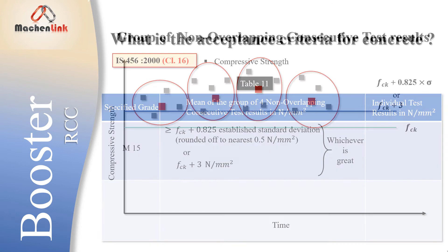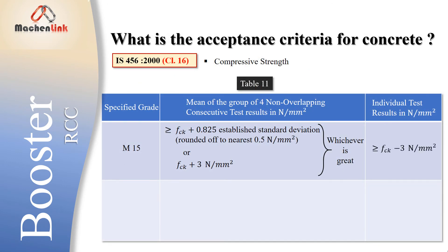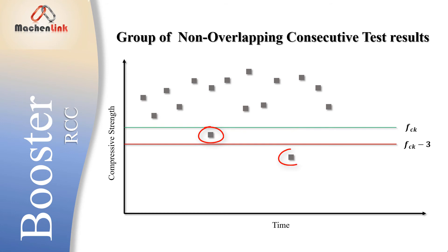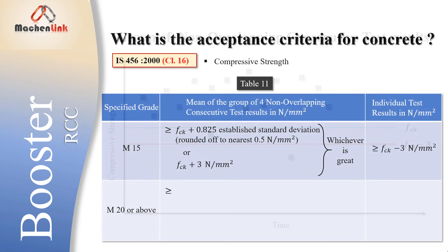The second criterion states that individual test results should be greater than or equal to FCK minus 3 N/mm². For example, if two results fall below that threshold, the one at or above FCK minus 3 is accepted but the one below is not. For acceptance of any concrete up to M15, both criteria must be satisfied.